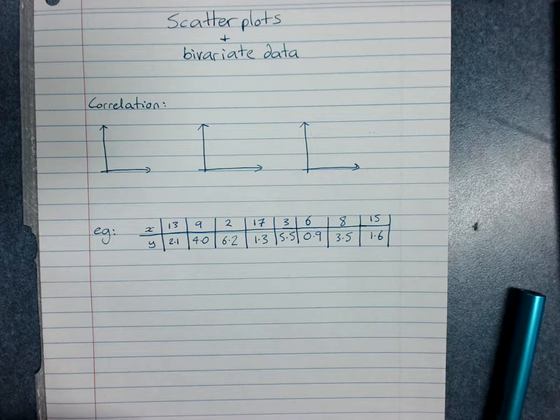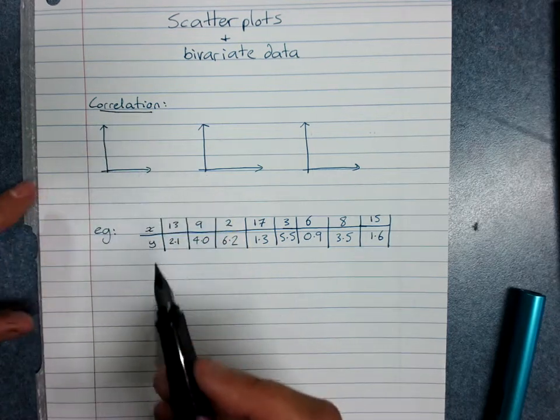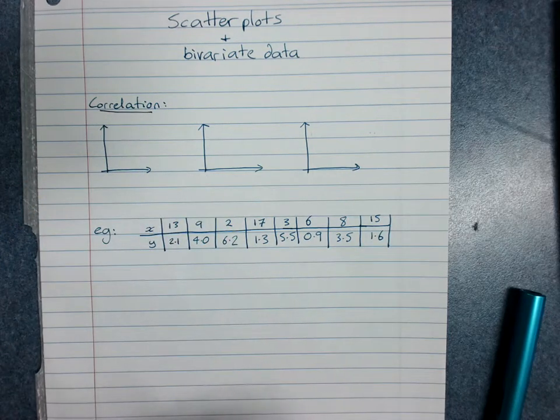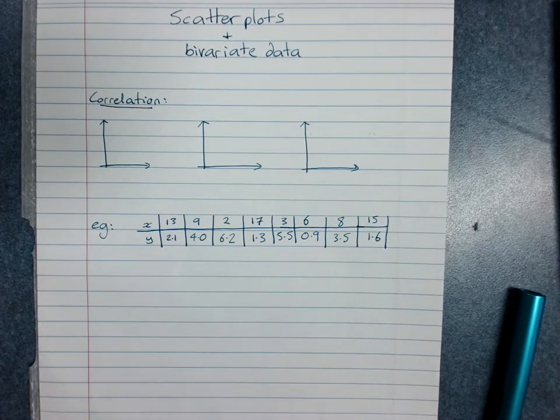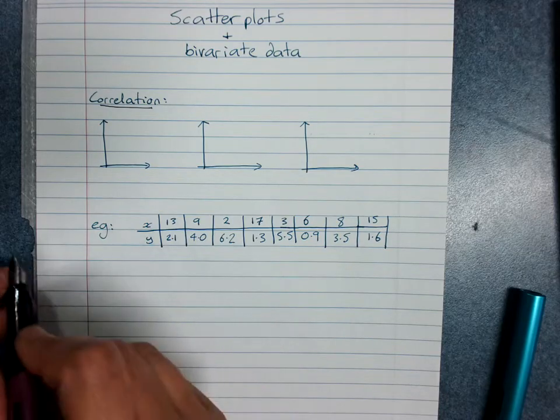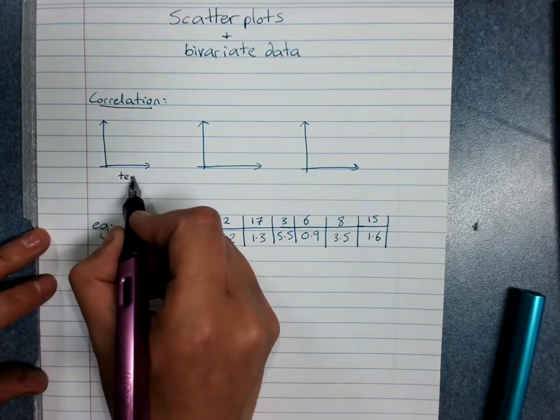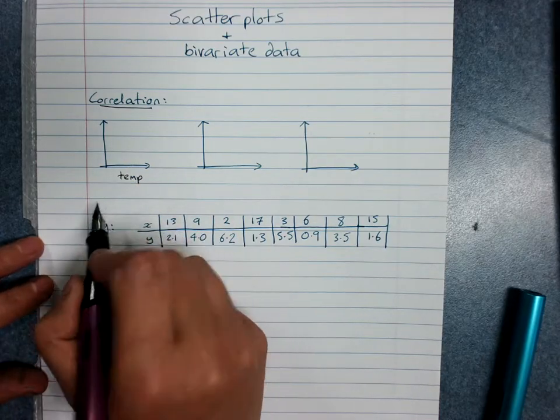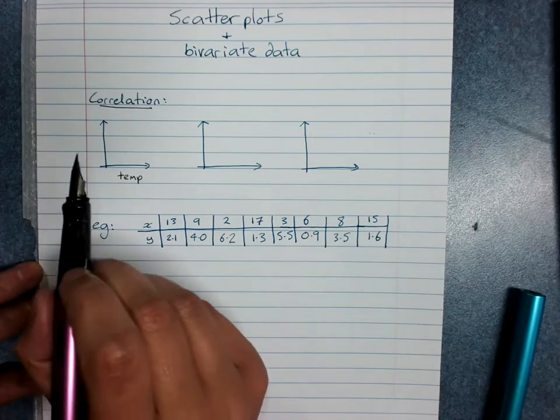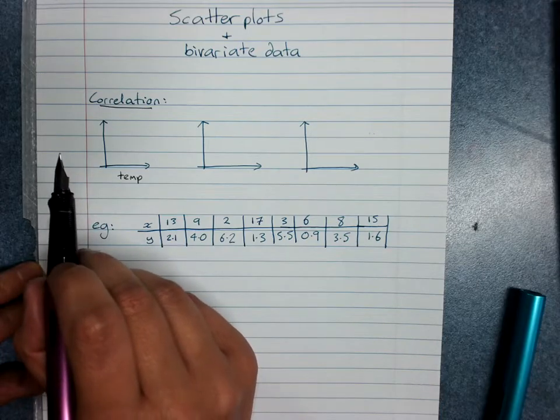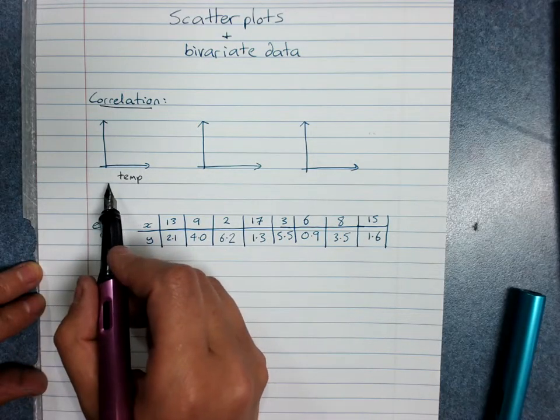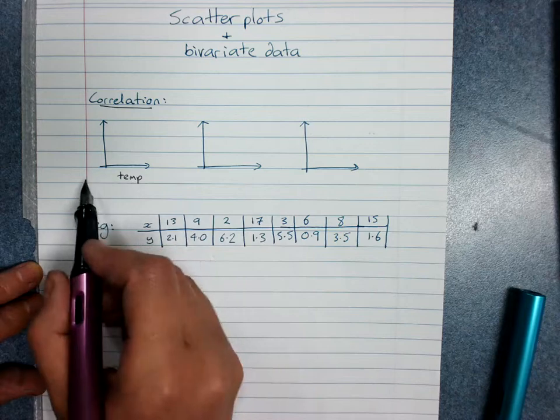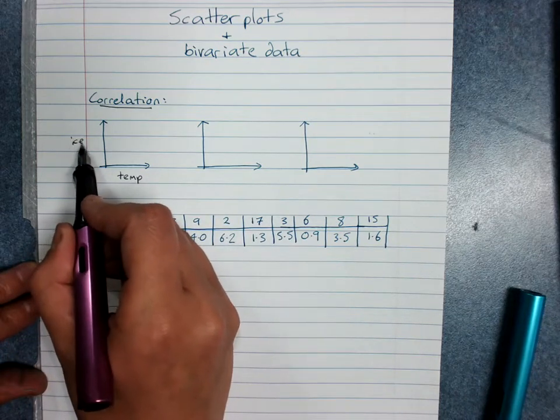So correlation refers to a pattern of relationship between the two variables that is not necessarily causative. For example, I measure temperature on particular days and I measure the number of ice creams sold.